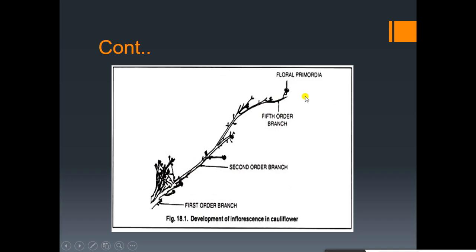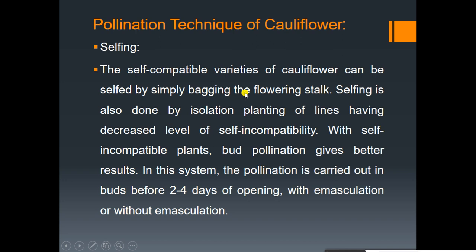The first pollination technique is selfing. In cauliflower, self-compatibility lines can be selfed by bagging the flowers. Selfing is also done by isolation planting. Plants having decreased levels of self-incompatibility — bud pollination gives better results. Pollination is carried out in buds two to four days before opening, with or without emasculation.